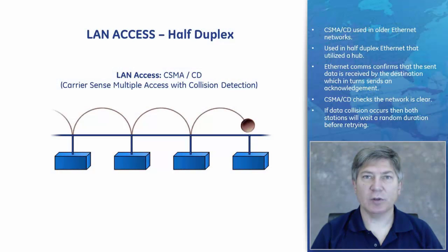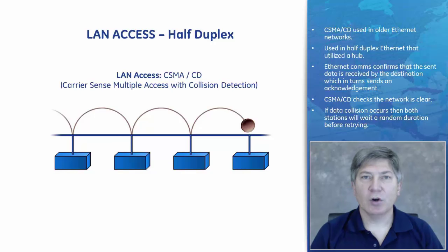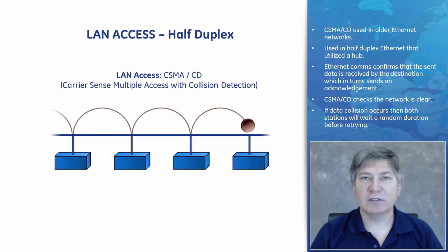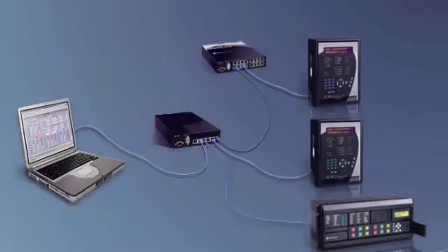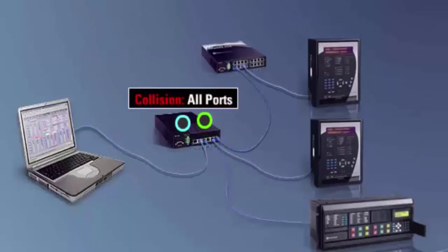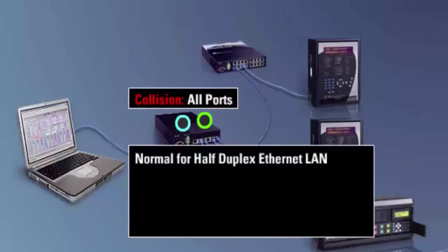When LAN access was used in half-duplex mode, a tool called Carrier Sense Multiple Access Collision Detection (CSMA/CD) was introduced. This was used in older Ethernet networks sharing a medium using unmanaged switches such as a hub. Only one frame from one station was transmitting in one direction at any moment. With CSMA/CD, if the network is busy, a station waits a random number of microseconds before retrying. If two stations transmit simultaneously, their signals collide, and both stations wait a random duration before retrying. If the blue and green Ethernet devices transmit at the same time, a data collision occurs. CSMA/CD will eventually deliver the message.